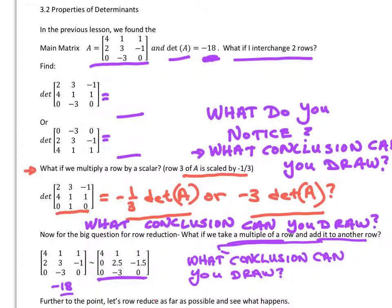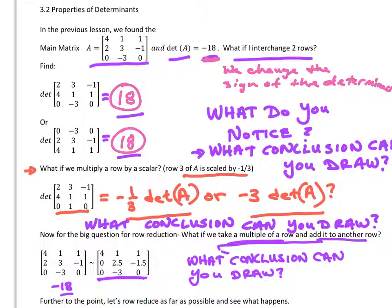So let's go back up here and make sure you did get this right. If I interchange two rows, you are going to end up with the opposite sign of the determinant of what we started off with. And so both of these would be 18.